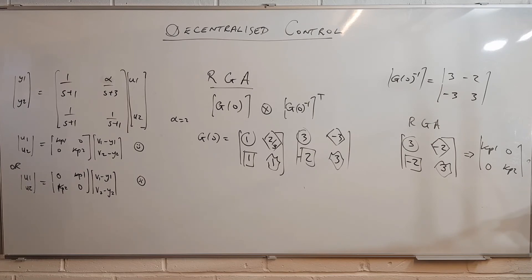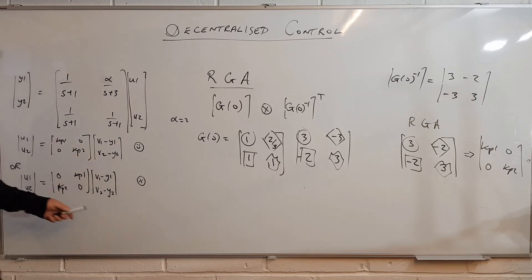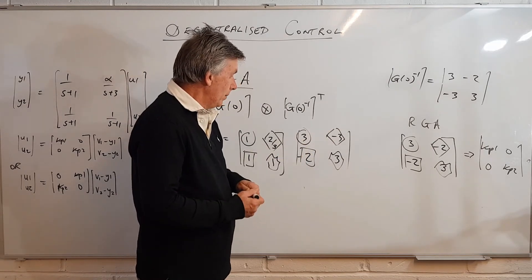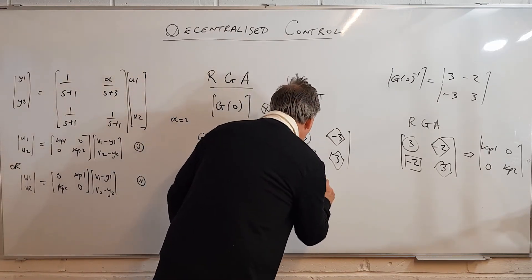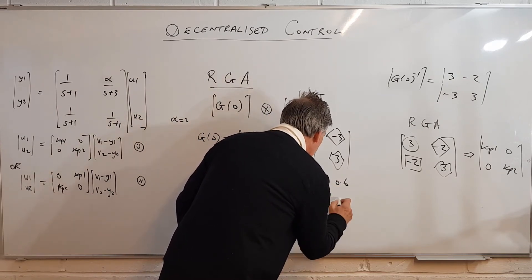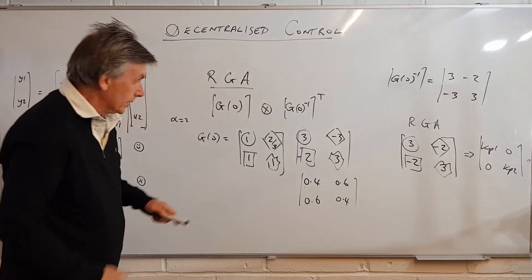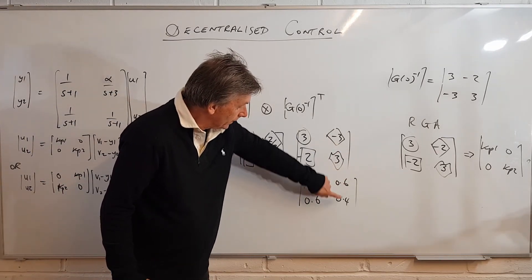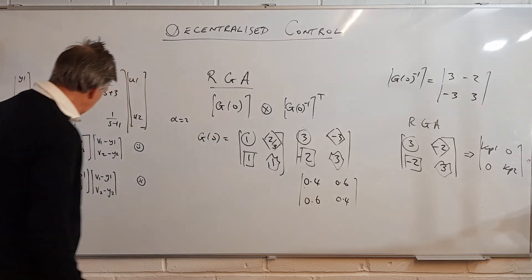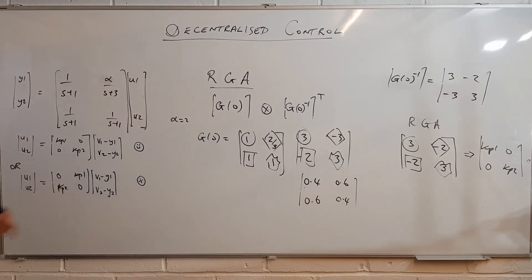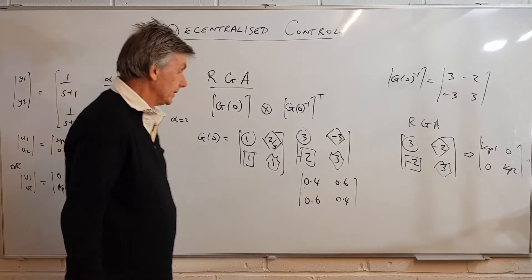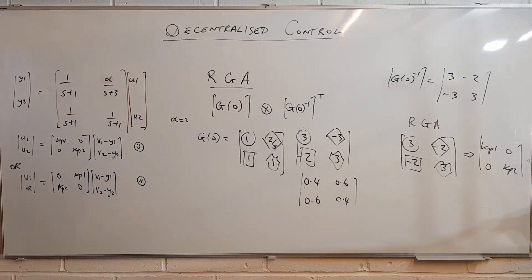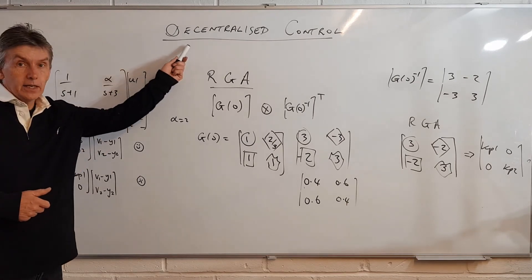In cases where the RGA has both entries less than one — for example 0.4 and 0.6 — both controllers could work, but you'd prefer the one with numbers closer to one. The closer the RGA values are to one, the more likely that pairing is the best controller. This is the basic thinking behind the design of decentralized controllers.